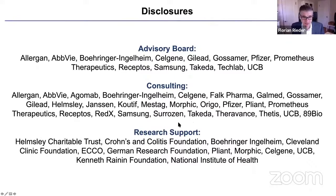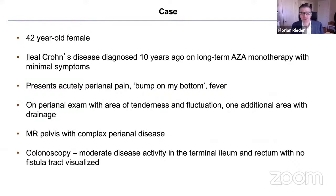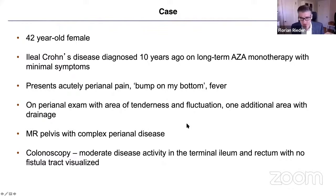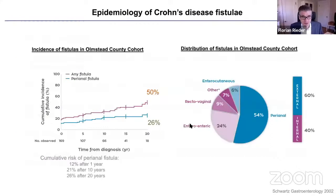We work a lot with industry to develop novel drugs to affect tissue remodeling in inflammatory bowel disease. The case is a 42-year-old female with ileal Crohn's disease diagnosed 10 years ago, on long-term azathioprine monotherapy with minimal symptoms, who presents acutely with perianal pain, a bump on her bottom, and fever. Perianal exam shows tenderness, fluctuation, and drainage. MRI of the pelvis shows complex perianal disease. Colonoscopy indicates moderate disease activity in the terminal ileum and rectum, with no fistula tract visualized on endoscopy. This patient has perianal Crohn's disease.